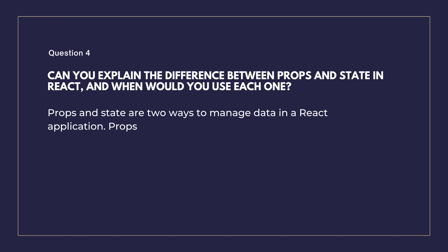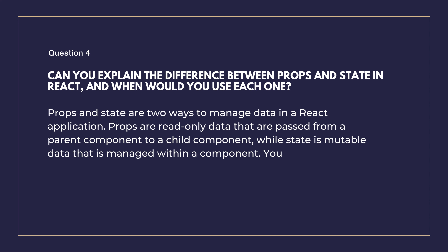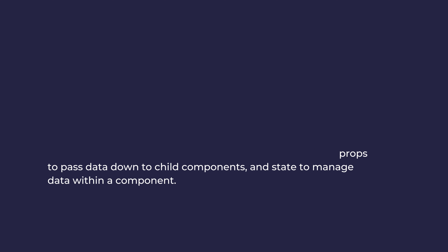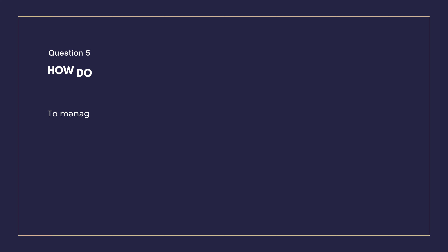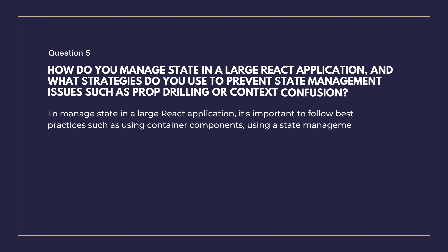Can you explain the difference between props and state in React, and when would you use each one? Props and state are two ways to manage data in a React application. Props are read-only data passed from a parent component to a child component, while state is mutable data managed within a component. You would use props to pass data down to child components and state to manage data within a component.